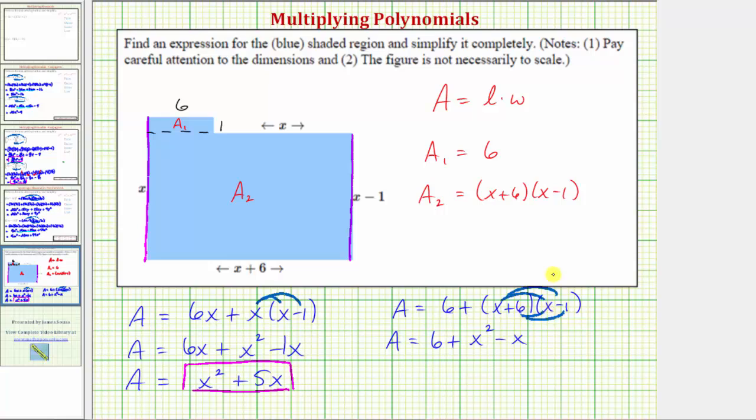Combining like terms we have the area is equal to x squared. Notice how we have six minus six, that's zero. We also have negative x plus six x, or negative one x plus six x, which is five x. So we do get the same expression, the total area is equal to x squared plus five x. I hope you found this helpful.